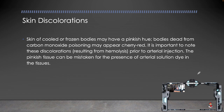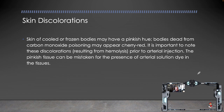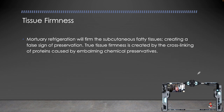The skin of cold or frozen bodies may have a pinkish hue. Bodies dead from carbon monoxide poisoning may appear cherry red. It is important to note these discolorations resulting from hemolysis prior to arterial injection. The pinkish tissue can be mistaken for the presence of arterial solution dye. Mortuary refrigeration will firm the subcutaneous fatty tissues, creating a false sign of preservation — chilled fat is a false sign. True tissue firmness is created by the cross-linking of proteins caused by the embalming chemical preservatives.